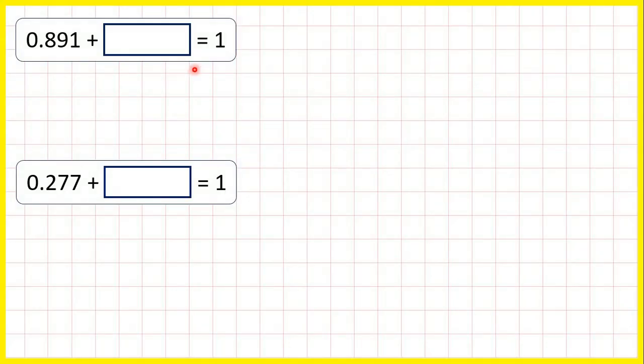Now, we need to make decimal number bonds to 1. So 0.891 plus what equals 1?